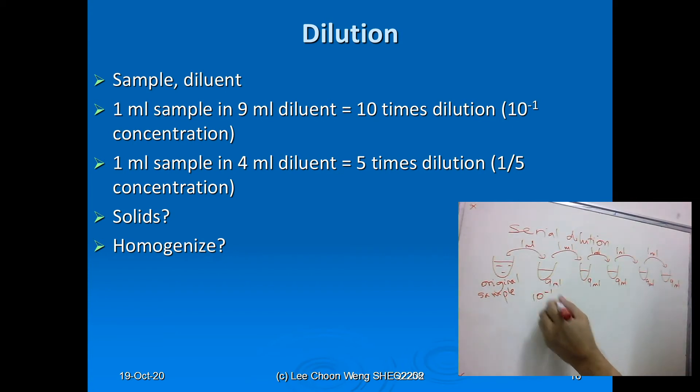You will get 10^-1, 10^-2, 10^-3, 10^-4, and 10^-5. So this is actually 1 over 100,000 of the original concentration.